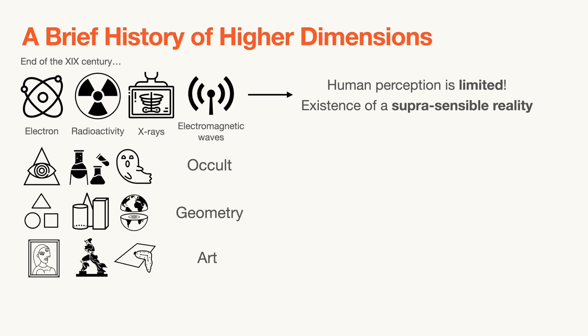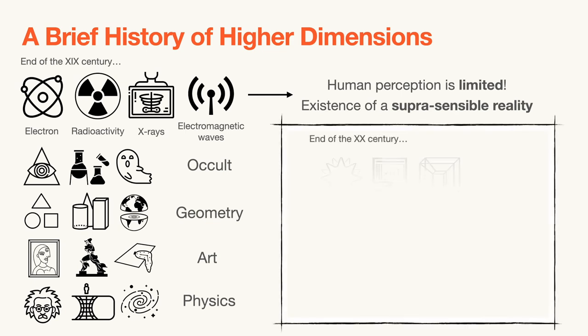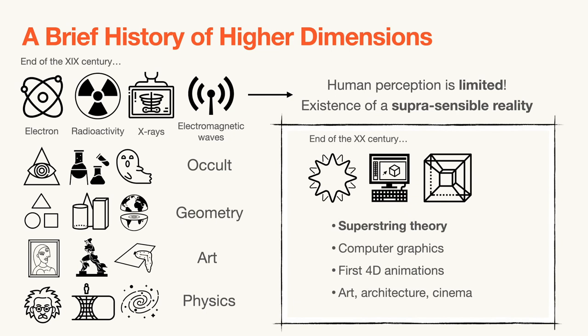But the concept of fourth dimension rapidly shifted towards the concept of time, with Einstein's relativity and Minkowski's space-time continuum. For instance, in this period we have the concept of block-universe, where we as humans move across 3D time slices of a 4D hyper-universe. But it was only towards the end of the 20th century that the emerging superstring theory predicted the existence of up to 11 spatial dimensions, and together with hardware improvements in computer graphics, brought interest back to 4D spatial dimensions, with the first 4D simulations and related artistic endeavors.